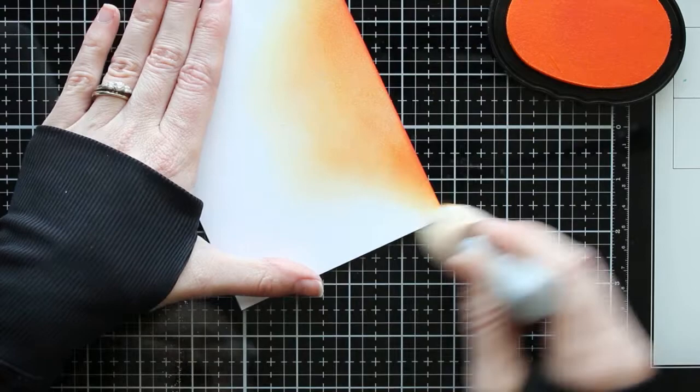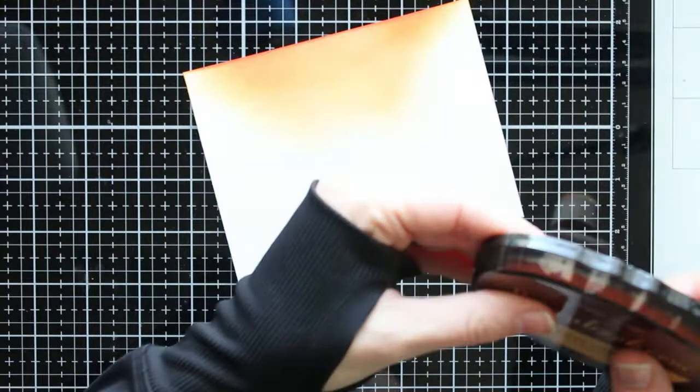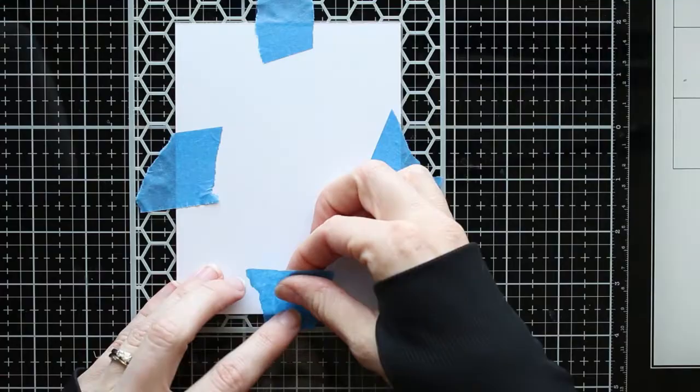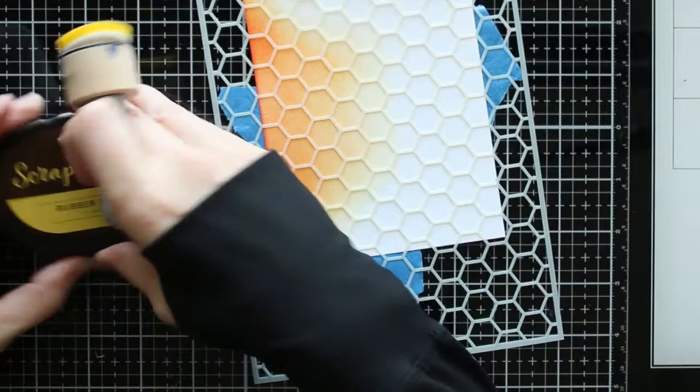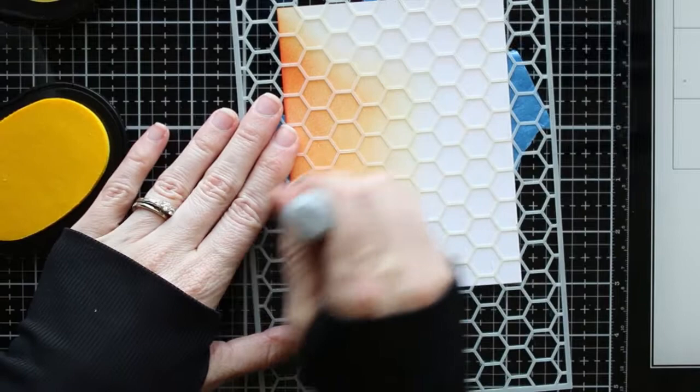So I've got all of the orange cream ink on there that I want and now I'm going to add my honeycomb stencil. So when I add my card fronts to my stencils I like to tape them onto my stencil from the back side that way it will keep my stencil in place. When I pull that tape off I'm pulling it off from the back side so even if it tears a little bit it's going to be on the back and it's not going to ruin my card front.